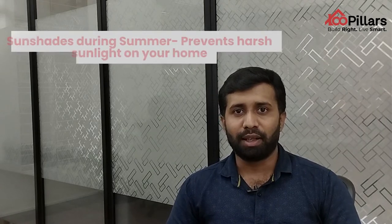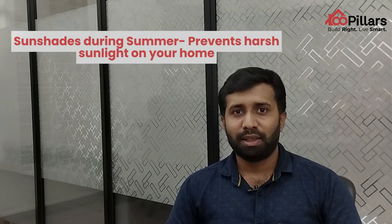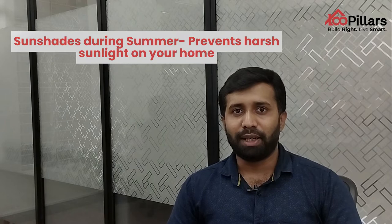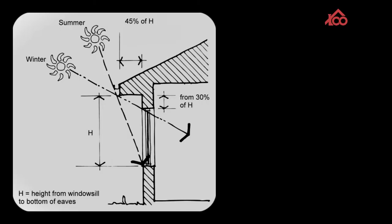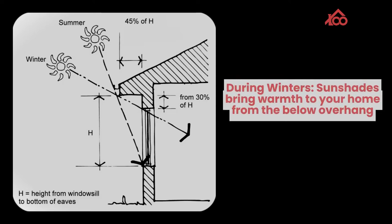Moving on to the third concept: planning your sunshades. Based on the different seasons, place your sunshades in such a way that it should be a one-fit solution throughout the year. During summer, when the sun is high and warm, sunshades help in cutting the harsh light and provide diffuse sunlight inside the house. Whereas in winter, the same sunshades can bring warmth to your house, allowing the sun to shine from below the overhang.